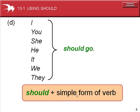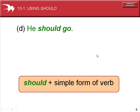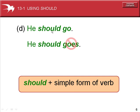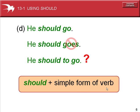SHOULD plus the simple form of the verb — in this example, 'go.' He should go. 'He should goes' is incorrect. SHOULD uses the simple form of the verb. 'He should to go' is also incorrect.